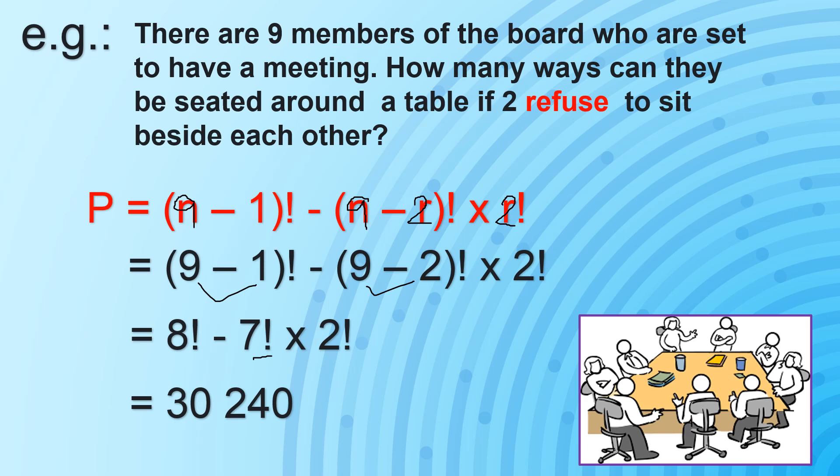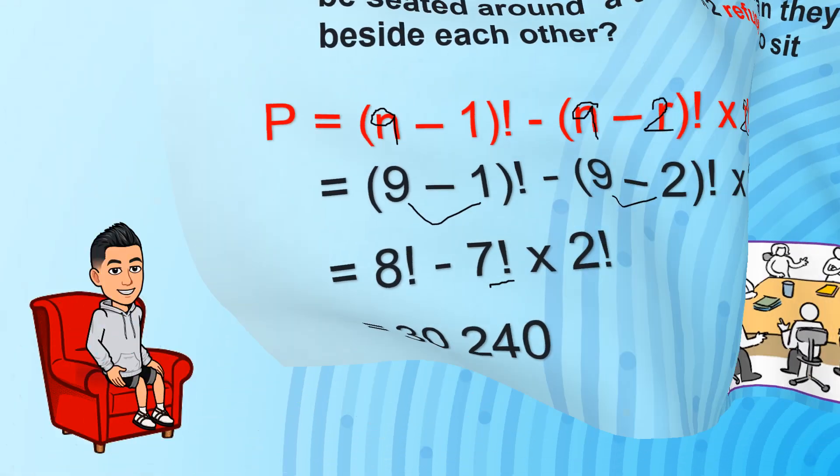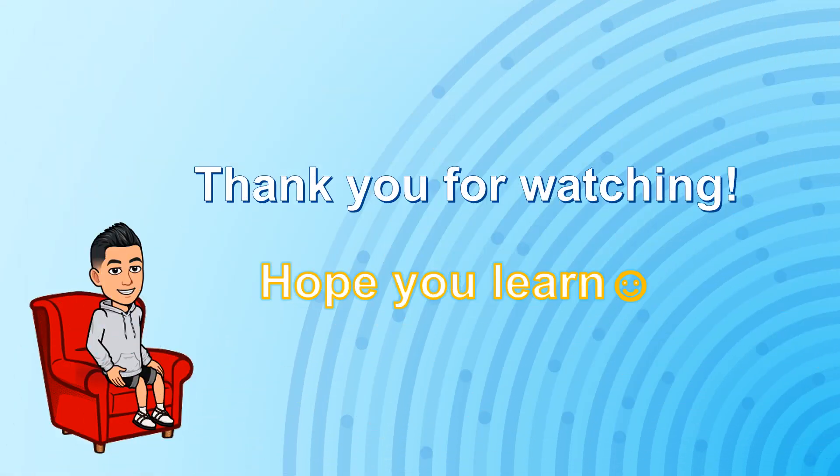This is how we use these formulas in dealing with circular permutation — the basic circular permutation, circular permutation where people want to be seated beside each other, and permutation where people don't want to be seated beside each other. I hope you understand what circular permutation is all about and that you learned something. See you next time.